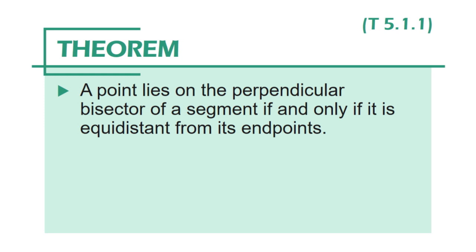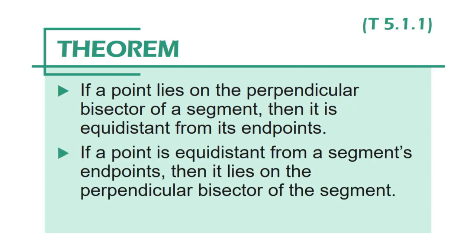A point lies on the perpendicular bisector of a segment if and only if it is equidistant from its endpoints. Notice that the theorem contains the phrase 'if and only if' — it's a biconditional. Since a biconditional can be written as two separate conditionals, we actually have a two-part proof here. On page 206 of your textbook, the second conditional is proved: if a point is equidistant from a segment's endpoints, then it lies on the perpendicular bisector of the segment. The first one is proved in the exercise section on page 211.